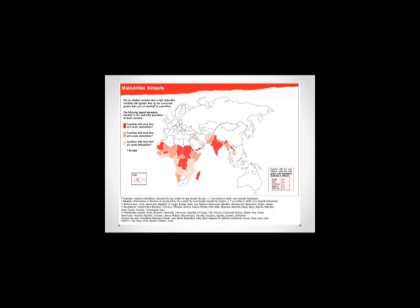Pictured here is a map of the world and its malnutrition hotspots. In this image, we can see that Africa, and specifically sub-Saharan Africa, consists of most countries with 15% acute malnutrition. However, it is important to note that all of Africa is suffering to an extent from malnutrition, which leads us into our next discussion of PEM in Africa.